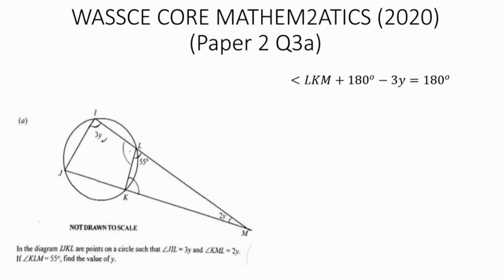Simplifying this by grouping like terms gives us angle LKM equals 180 degrees minus 180 degrees plus 3Y. So angle LKM equals 3Y.